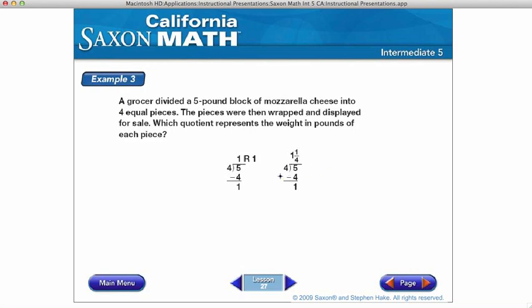Okay, so we take a look here. I have five divided by four. Four goes into five once. One times four is four. Subtract, bring down. I have a remainder of one. Or, four goes into five once. One times four is four. Five minus four is one. And it becomes my fraction one-fourth.